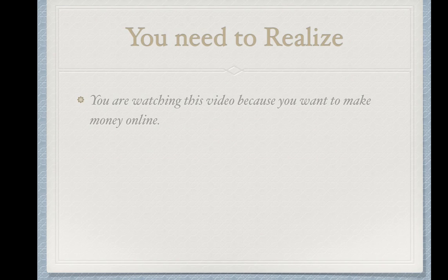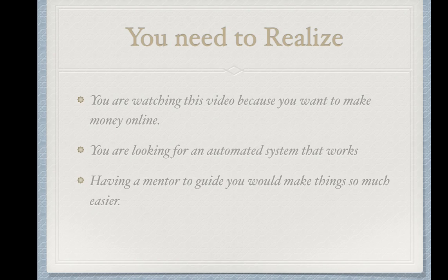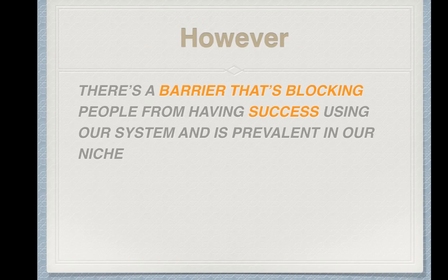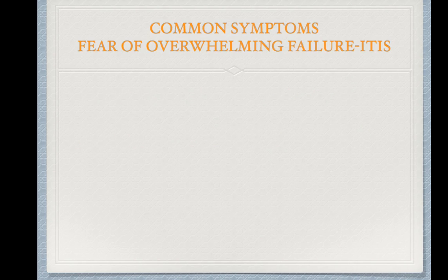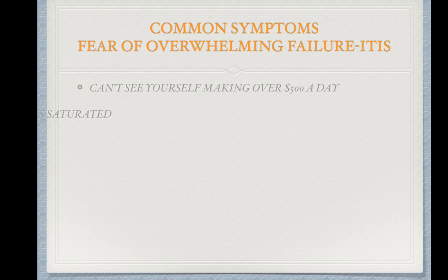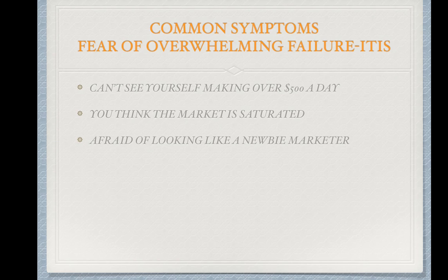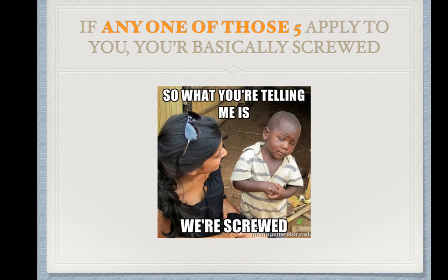You're watching this video because you want to make money online — you're looking for an automated system that works, a mentor to guide you, and something that does what it says. Unfortunately, there's a barrier blocking people from success, and it's prevalent in our niche. You're especially susceptible if you're new or haven't had success before — it's what I call 'overwhelming failure-itis.' Symptoms include: you can't see yourself making over $500 a day, you think the market is saturated, you're afraid of looking like a newbie, or you don't know how to get over 50 leads a day. If even one of those applies to you, you're stuck.